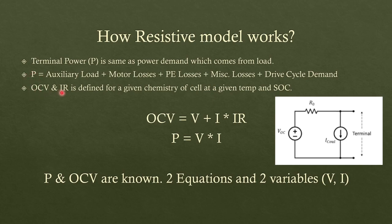So OCV and IR is typically fixed for a cell or a pack once the chemistry is defined. For example, if you know your cell is made up of NCM, some form of NCM and graphite, then more or less your OCV and IR is fixed. And these are typically a function of temperature and SOC. So OCV and IR is known, P is known.